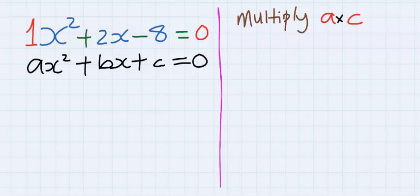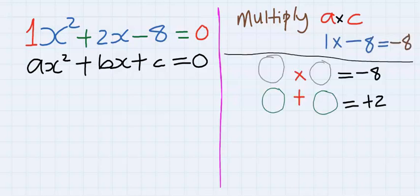The first step here is multiply the coefficient of x squared by the constant. Next, there exist two numbers. When you multiply them, you get minus 8. But when you add the two numbers, you get a replacement of plus 2 at the middle of the quadratic. The two numbers are 4 and minus 2.